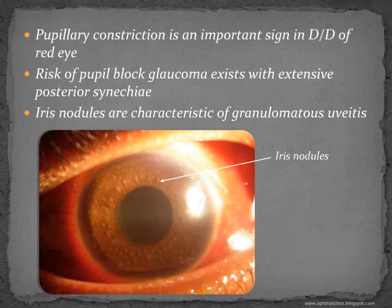The risk of pupil block glaucoma exists whenever there are extensive posterior synechiae. If the posterior synechiae were to be 360 degrees, then there is a block to the passage of the aqueous, and this can result in iris bombé. The patient can have severe rise of intraocular pressure and pain.